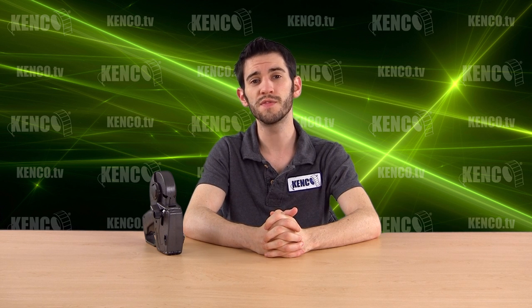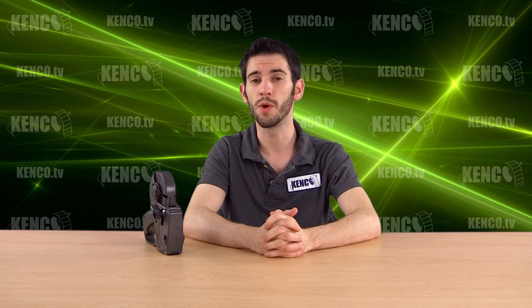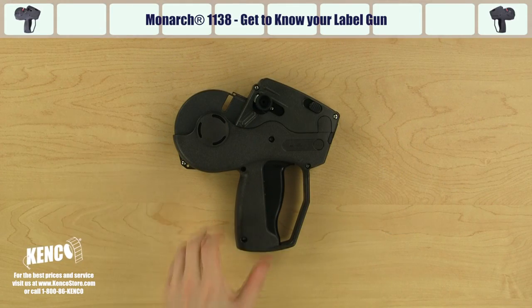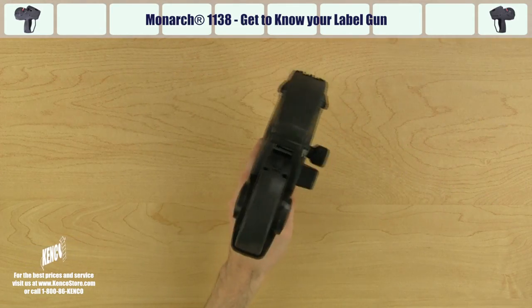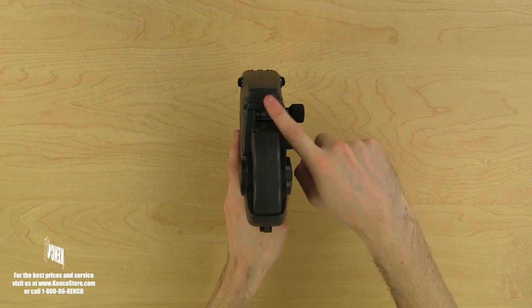Before we begin, let's familiarize ourselves with several key components of the gun. Let's pick up the gun with our left hand and take a look at the top. Right away, you will notice the print head and the adjustment dial.